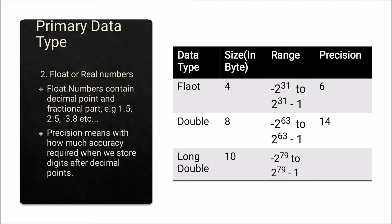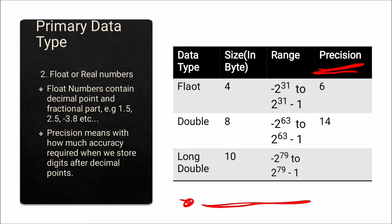The next one is float or real numbers. Float numbers contain a decimal point and fractional part, which is not possible in integer data type — values like 1.5, 2.5, minus 3.8, etc. can be stored in float. Here one important terminology is precision: precision means with how much accuracy digits are stored after the decimal point. In float or real numbers there are float, double, and long double.